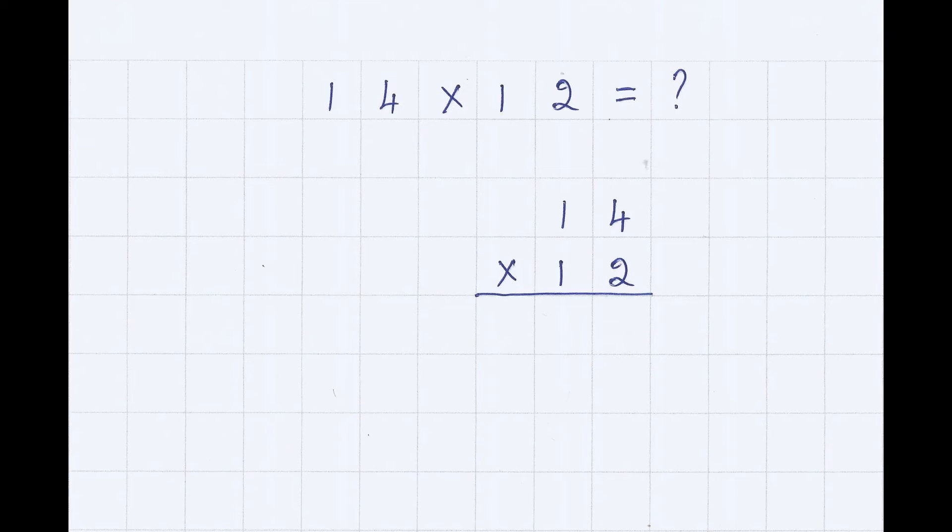Multiply the units of the multiplier with the units of the multiplicand to get 8. Next, 2 multiplied by 1 ten is 2 tens, which is written in the tens place. We now have 28.